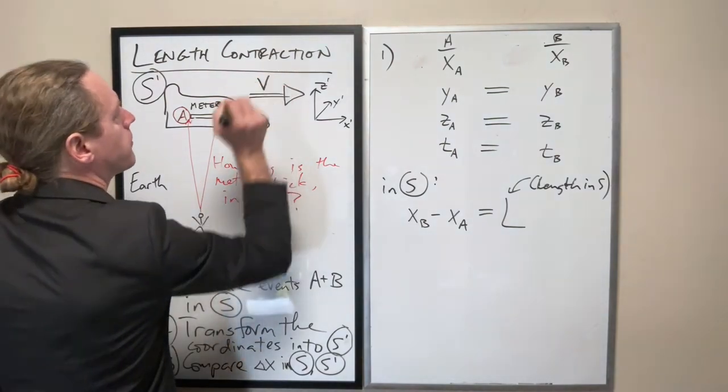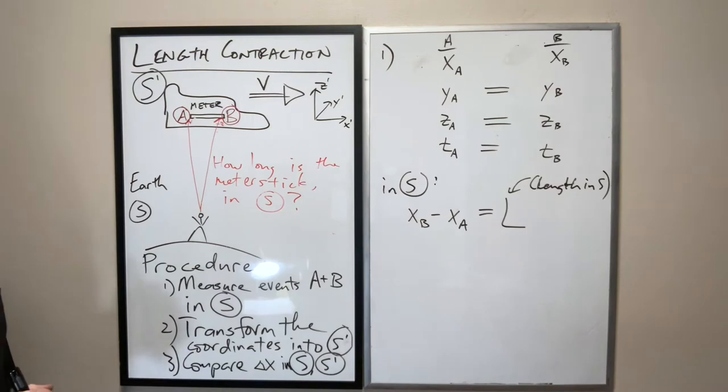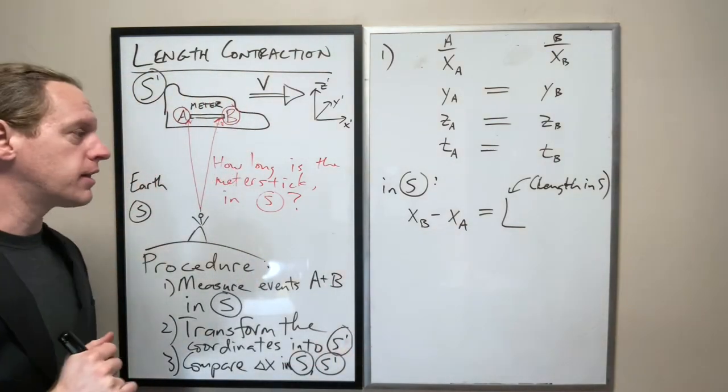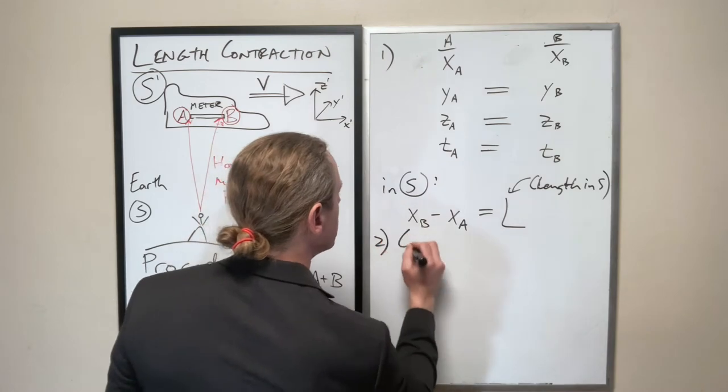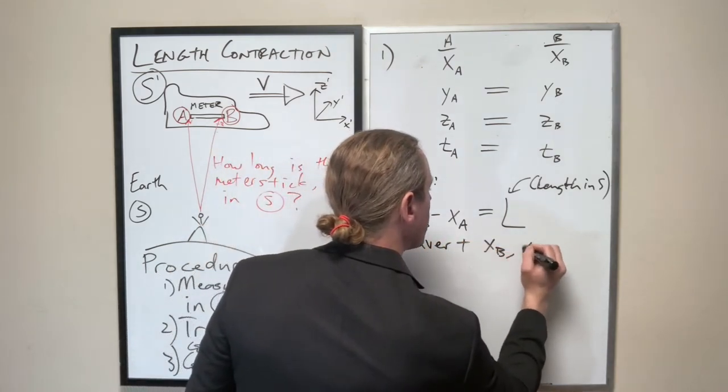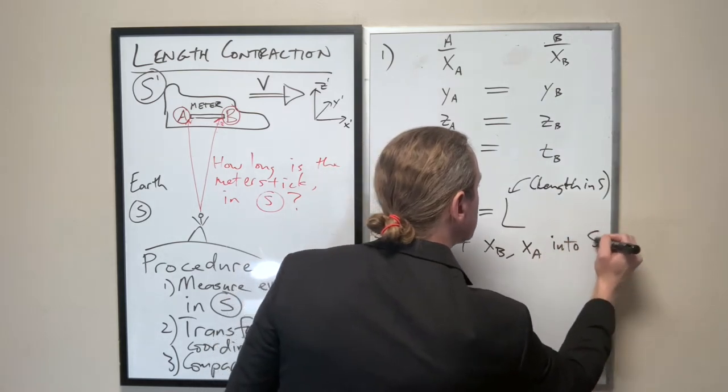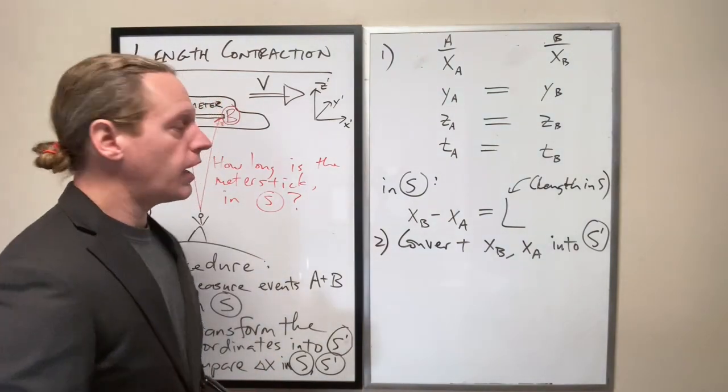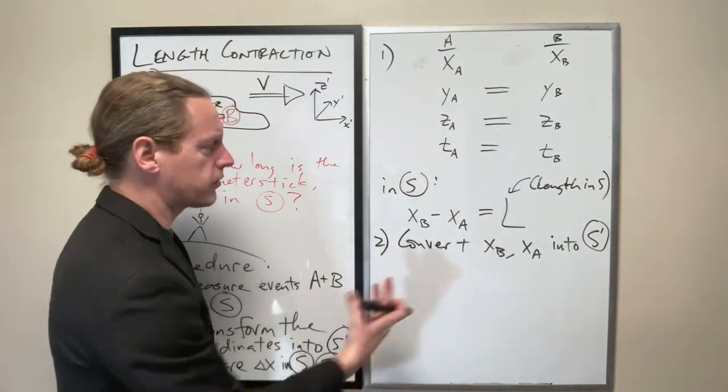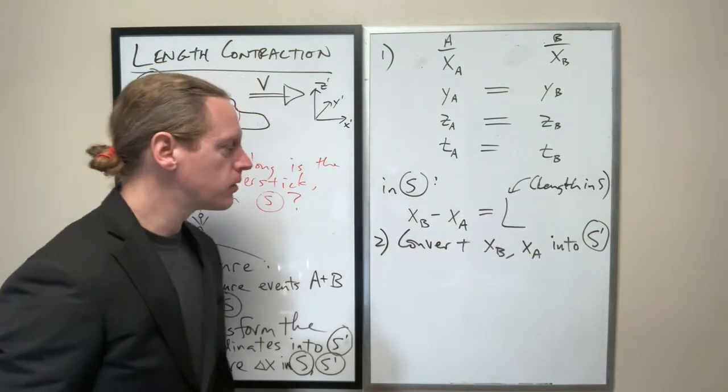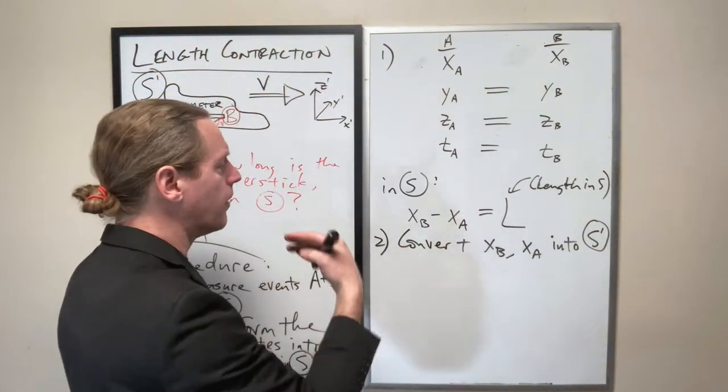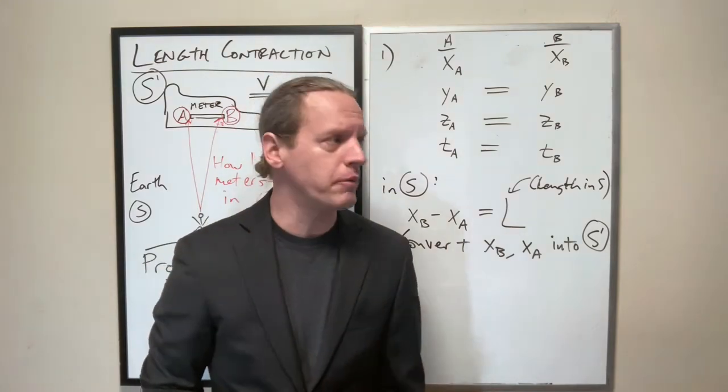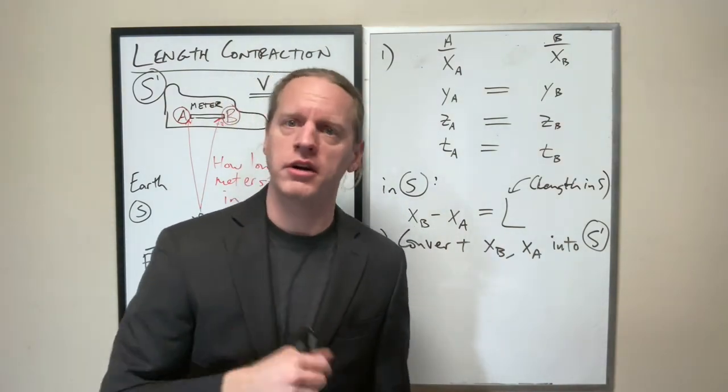So the only difference here is going to be some length measurement between the two events. Now with that said, and by the way, this whole thing is moving at a velocity V as a standard. What we want to do now is now that we have our measured length, and again, just assume that he actually has some values for those. Now that we have our measured length, let's convert. So step two, convert XB, XA into S prime coordinates using, of course, the Lorentz transformations. As you work through more and more relativity problems, you should really kind of start to memorize the transformation formulas.